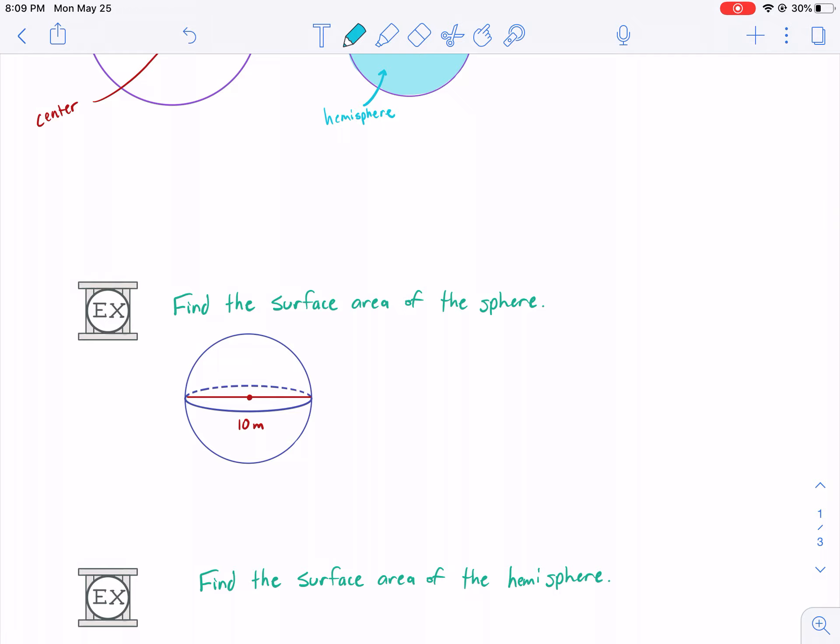So here we have, find the surface area of the sphere, given a diameter of 10. We don't want the diameter, we want the radius. And so, of course, that's half of that. So we have five meters.